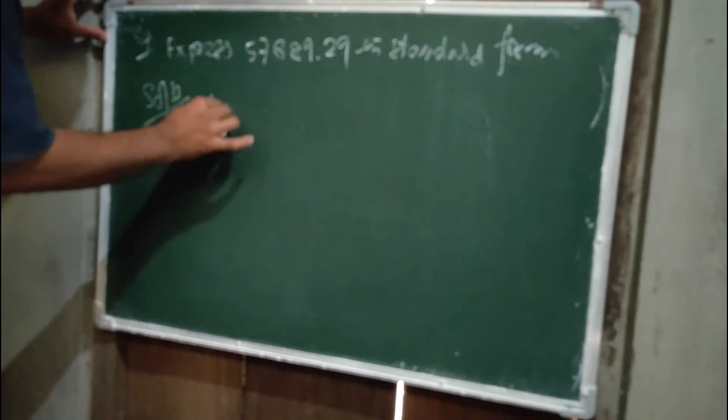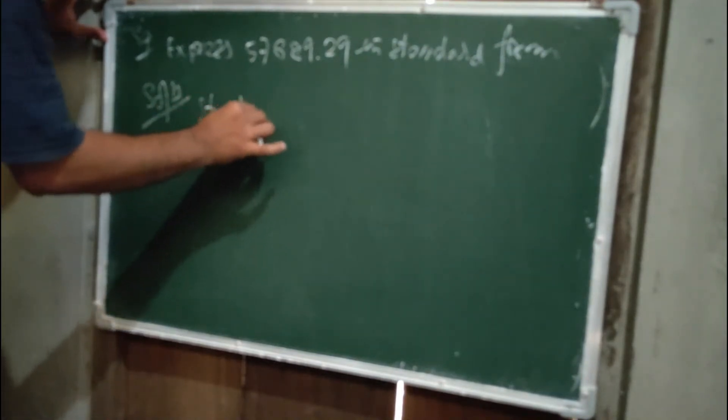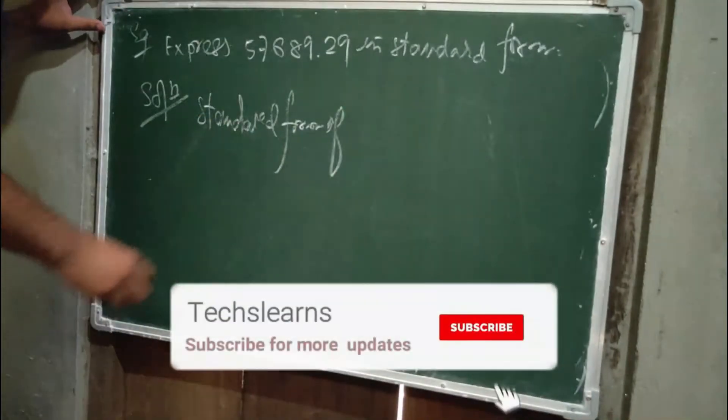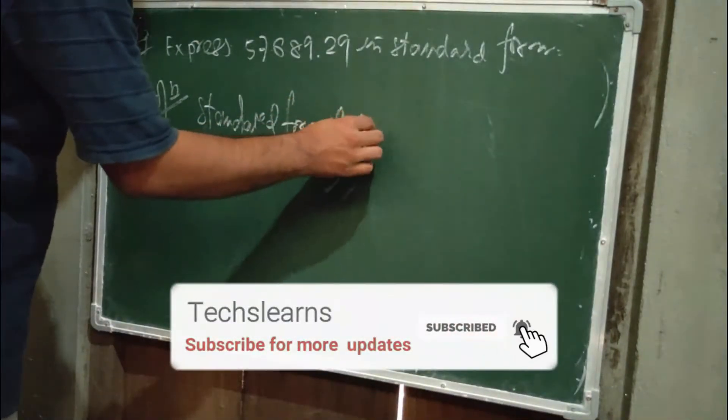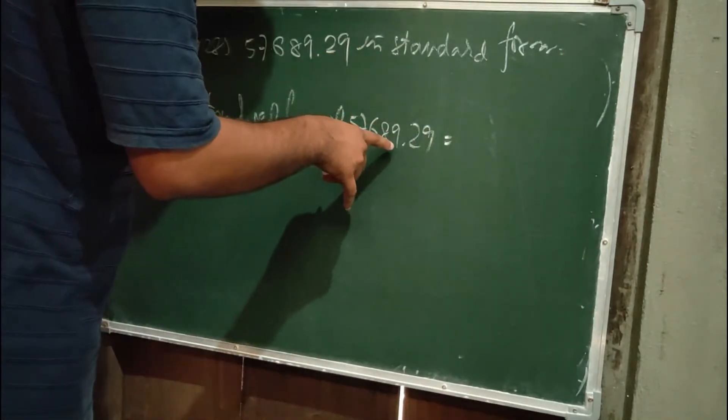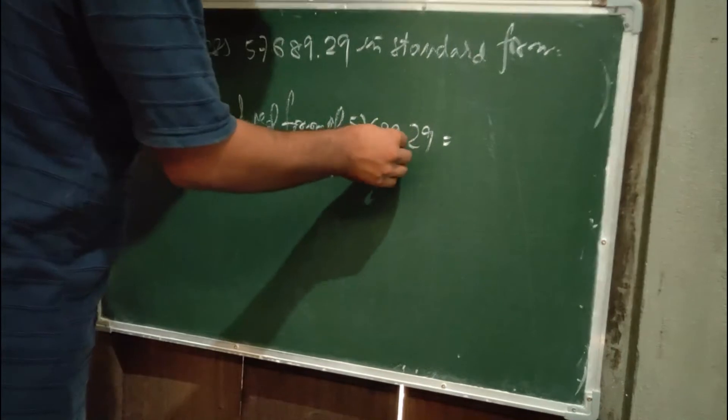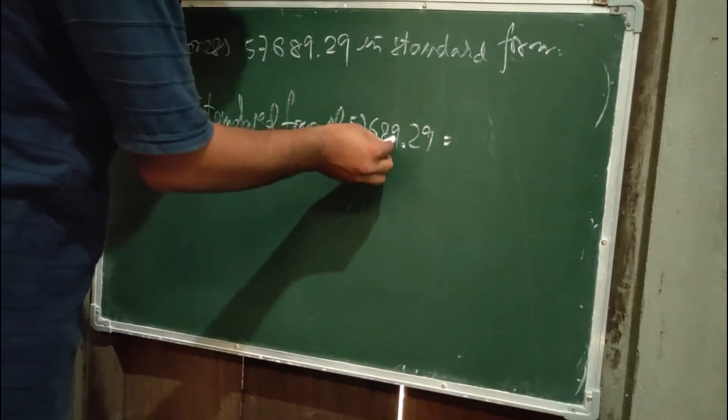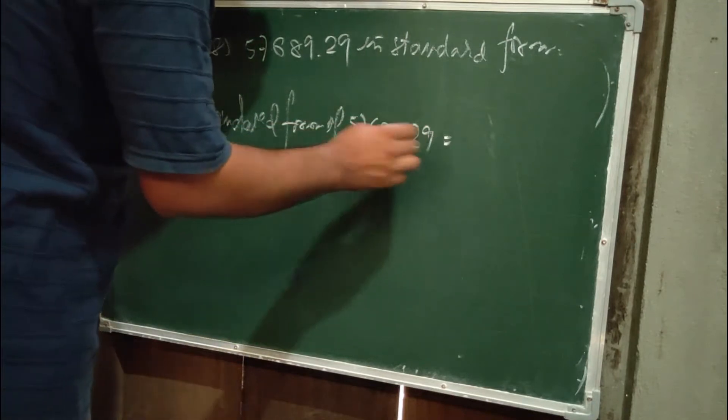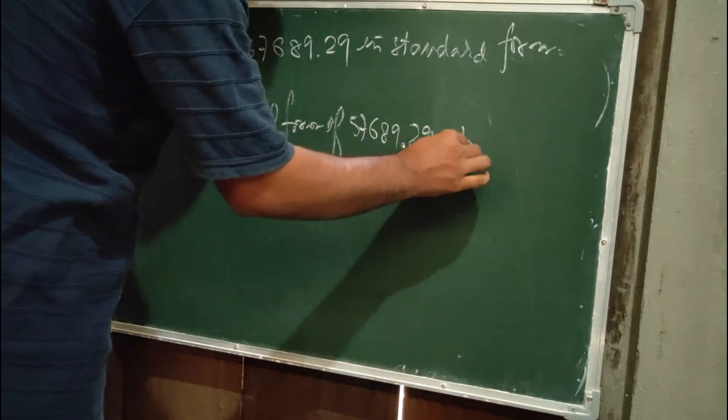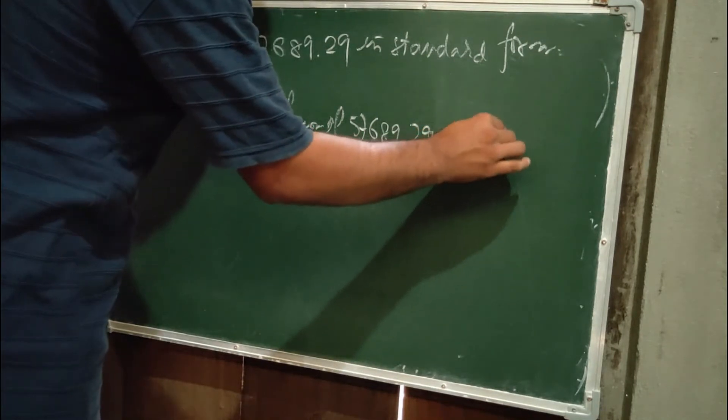Standard form of 57689.29: First, locate the decimal point. We'll bring this point left - 1, 2, 3, 4 digits before. That means it will become 5.768929.